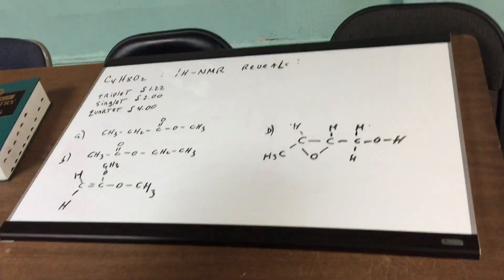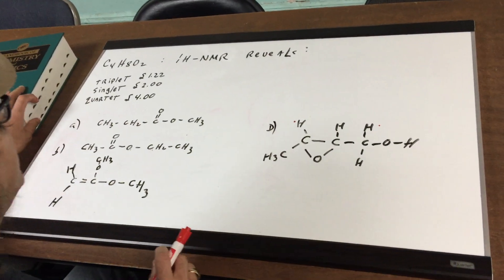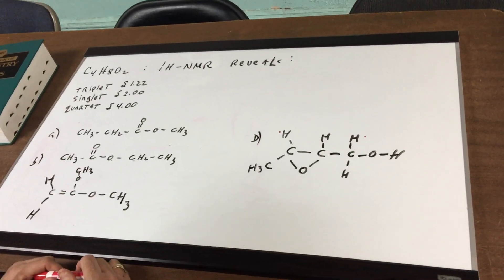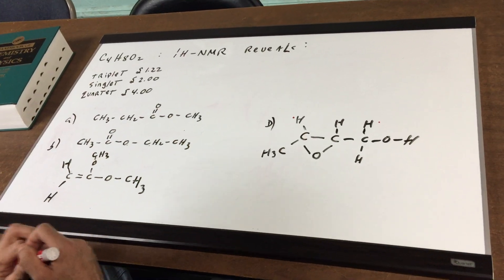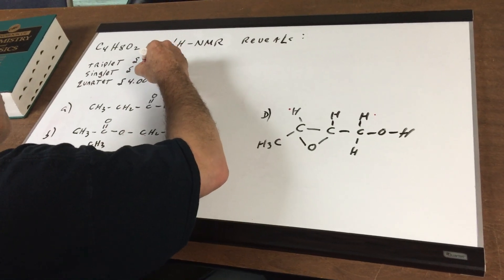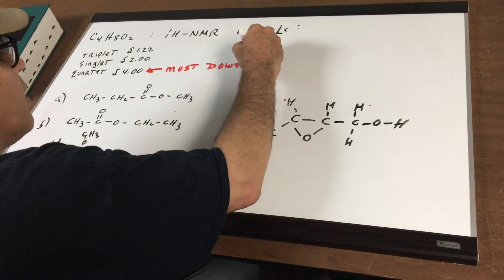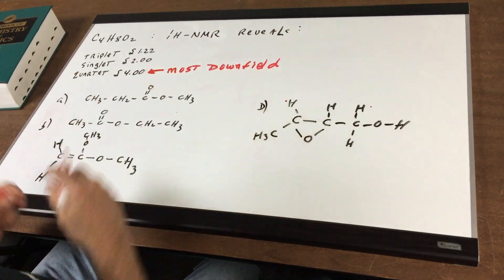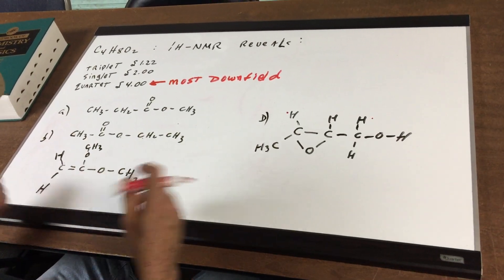I give you a C4H8O2 compound and I say to you that the NMR data reveals a triplet, a singlet, and a quartet. Now the first thing that you should focus on is the largest number. The largest number is the most downfield signal. This should really help you eliminate almost every choice right in itself.